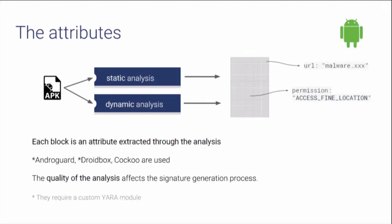In order to generate a signature, you need to start from some attributes — features extracted from the application through both static and dynamic analysis. Each feature could be represented as a small square within the gray grids in the slides — for example, a permission, an intent filter, or anything else. It's very important that the analysis is performed carefully, because through the analysis we extract the attributes, and having good attributes is the key to having a good signature.